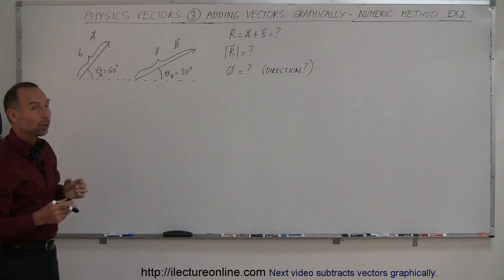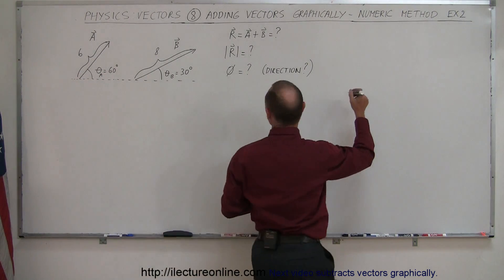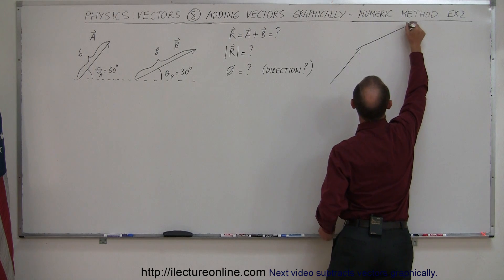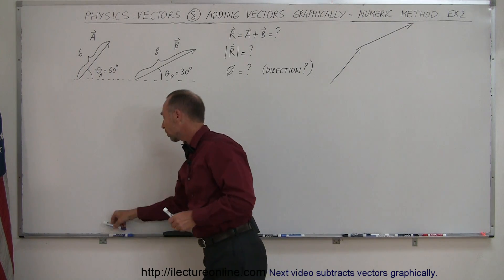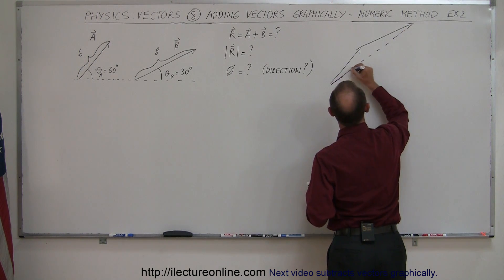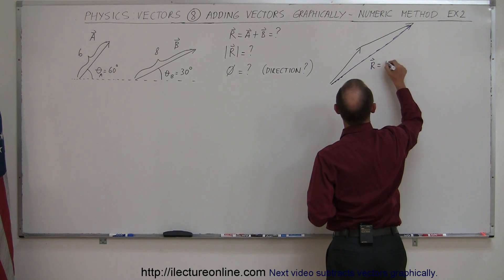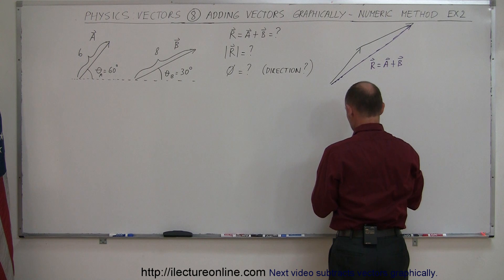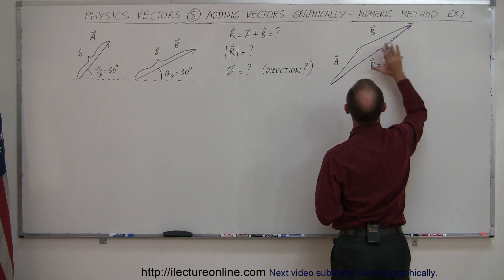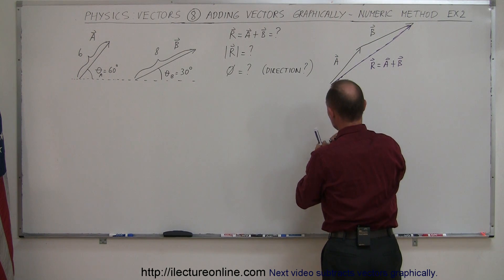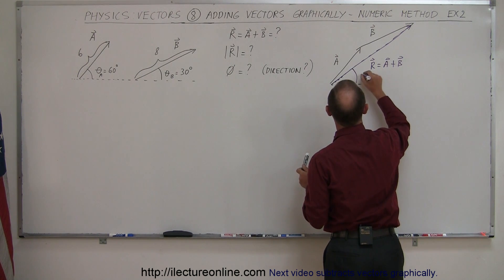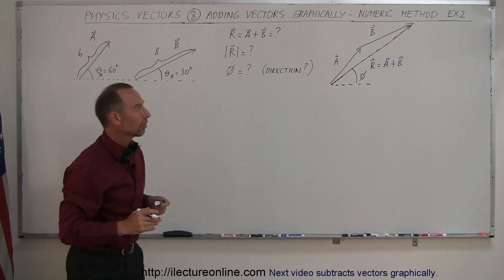Using the tip-to-toe method, we draw vector A and vector B. The resultant vector is equal to A plus B — drawn as a solid line from the tail of A to the tip of B. This is the angle phi that the resultant makes with respect to the horizontal, and we're also looking for that angle as the direction of the resultant vector.